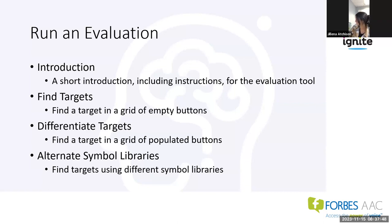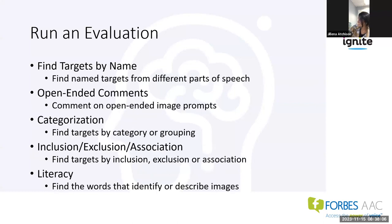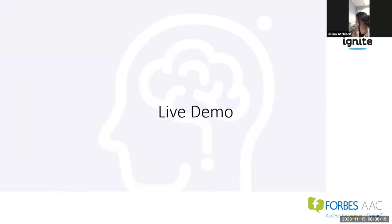The evaluation includes an introduction with instructions, then finding a target in a grid of empty buttons, differentiating targets in a grid of populated buttons, alternating symbol libraries, finding targets by name, open-ended comments, and categorization — finding targets by inclusion, exclusion, or association, and finding the words that identify or describe images.